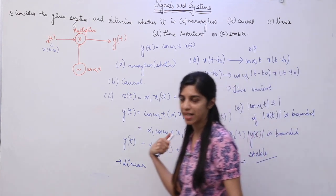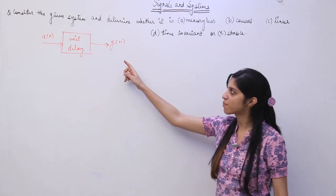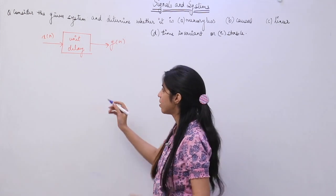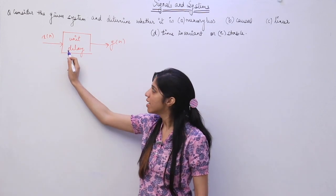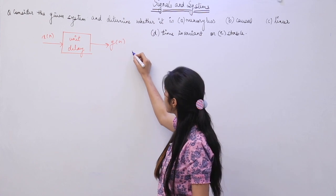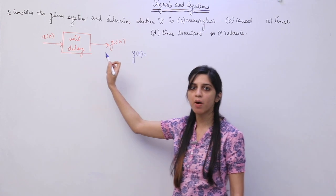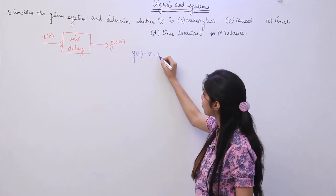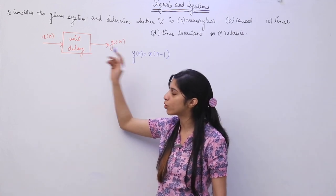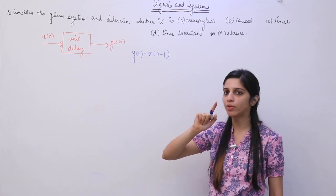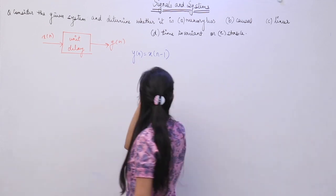Next we are going to look at an example of a discrete time system. We are given a discrete time system with a unit delay element. What it does is delay the input by one unit time. So the output at time instance n is going to be the input at instance n−1. This unit delay element produces a delay of unity. This is the mathematical equation relating this system: y[n] = x[n−1].